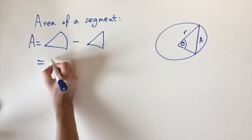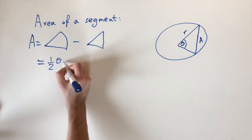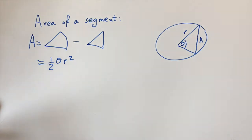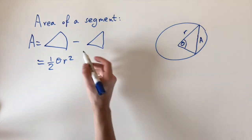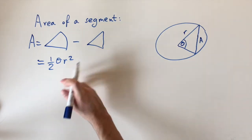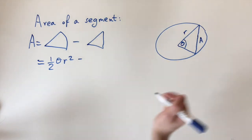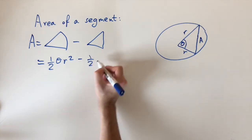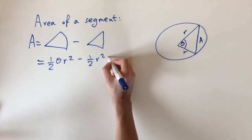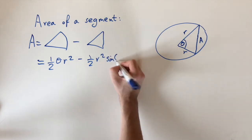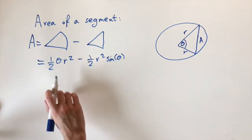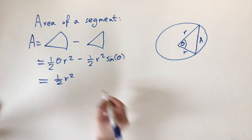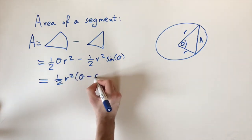We have formulas for these from previous videos. The area of a sector is one-half times theta times r-squared, where theta is in radians — this is really important. The area of a triangle given the angle and two sides is one-half times r-squared times sine of theta. We can simplify since both terms share one-half and r-squared, giving the segment area formula: A = (1/2) r² (θ − sin θ).